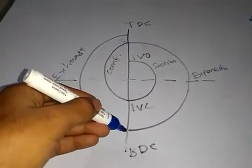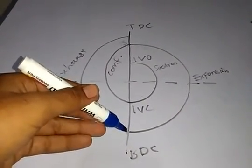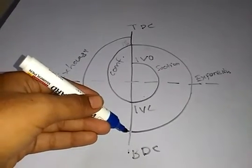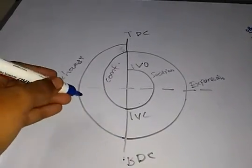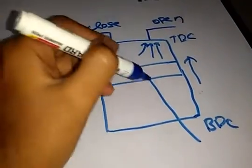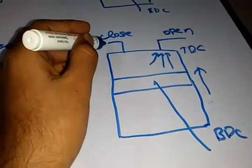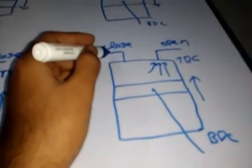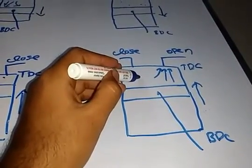After the power stroke the piston is at the bottom dead center. From here, what we have to do is remove all the burnt gases. The piston again compresses the burnt gases — it travels from BDC to TDC. In this diagram we can see the piston travelling from BDC to TDC. You have to note that the inlet valve is closed and the exhaust valve is open, so all the burnt gases — as indicated by this arrow — pass through the exhaust valve.